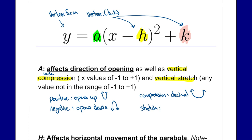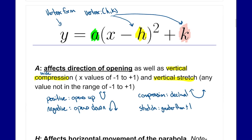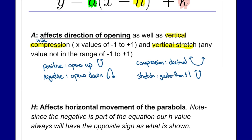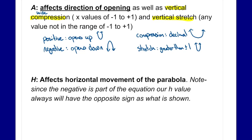A stretch is when the a value is above the range of negative one to positive one — basically any value greater than one, whether positive or negative. It could be a negative two or negative three — we're not too concerned about the sign when talking about stretch or compression. A stretch looks like taking a rubber figure and pulling the head and feet apart, making it very tall and skinny.